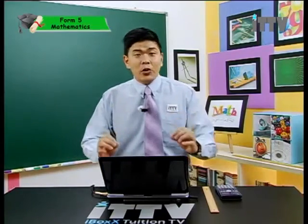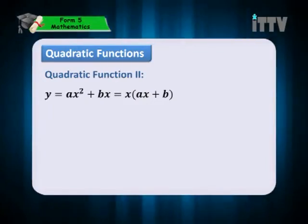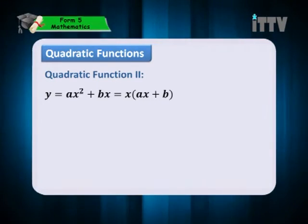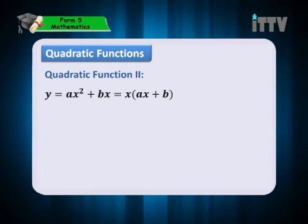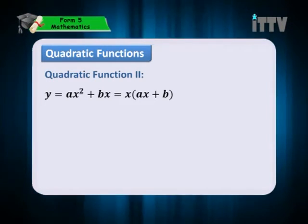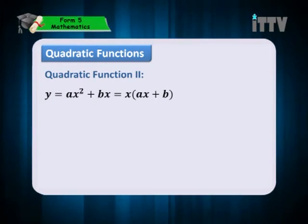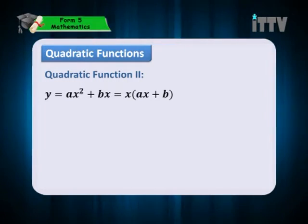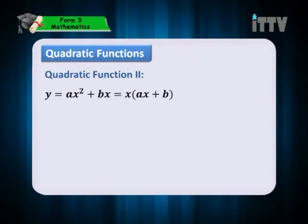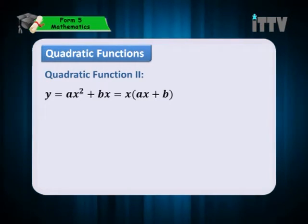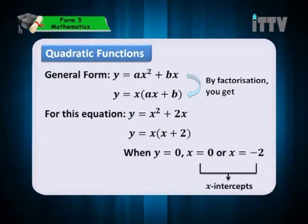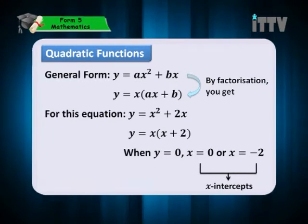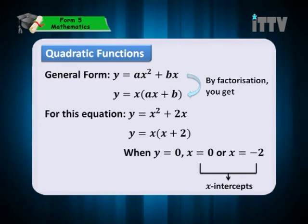Now let's take a look at a different form of the quadratic function. We have seen that a quadratic function is y equals to ax-square plus bx plus c, but now y equals to ax-square plus bx — there is no c here because c equals zero. This function can be factorized to become x bracket ax plus b. So the general form is y equals to ax-square plus bx, and by factorization, y equals to x bracket ax plus b.